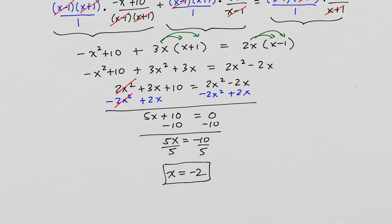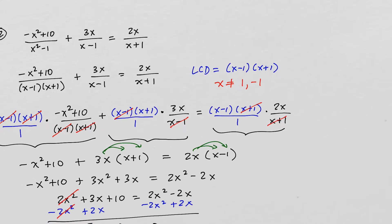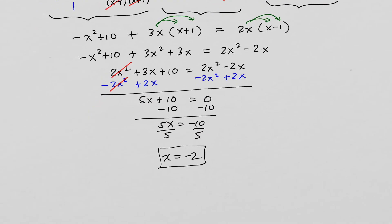Dividing both sides by 5, we get x equals negative 2. This is our answer. Remember, when you get your answer, you need to compare it to the restrictions from the beginning. We said x cannot equal positive 1 or negative 1. Our answer is negative 2, which means we are in the clear — negative 2 is okay. So this is our answer.